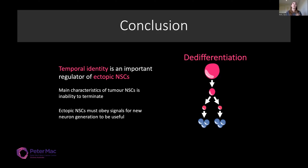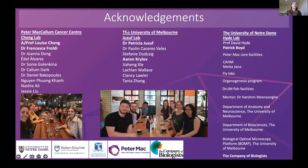Secondly, we know that ectopic neurostem cells have to obey signals for appropriate generation of new neurons. This is really important when thinking about regeneration or using induced pluripotent stem cells to create correct neurons — they have to be obeying the correct signals, otherwise we're just going to get the wrong kinds of neurons being created. With that, I would like to thank both of my labs: Louise's lab at Peter Mac and Patricia's lab at Melbourne Uni, and all of the core facilities. Thank you.